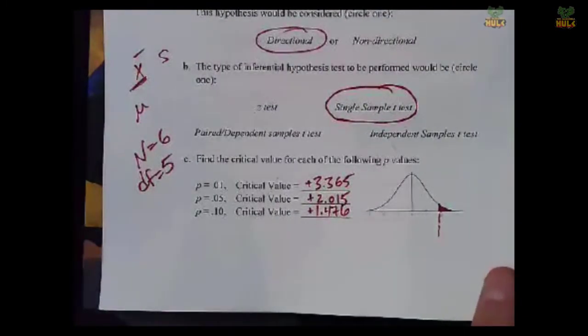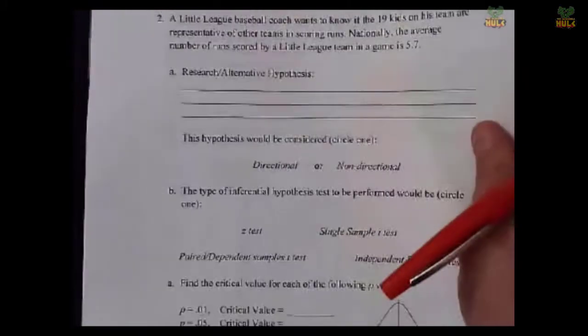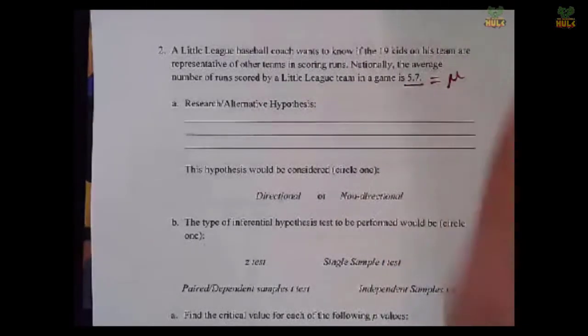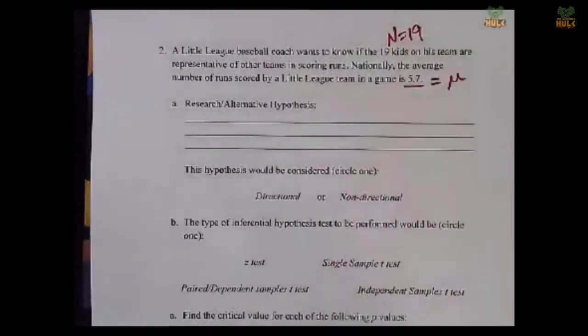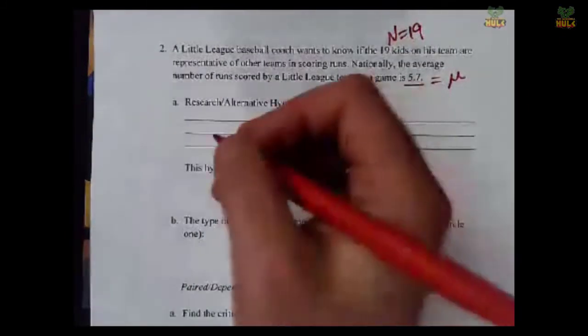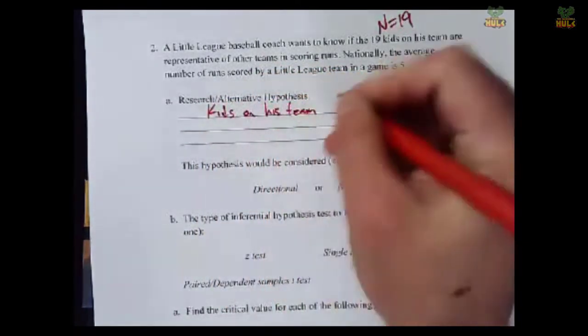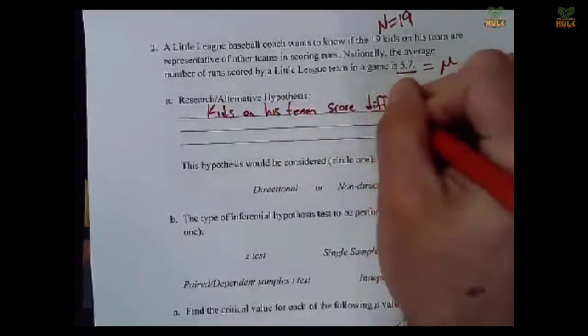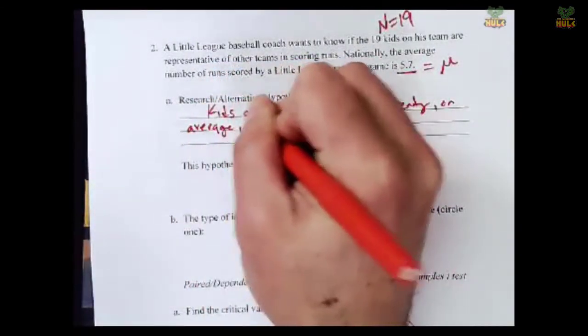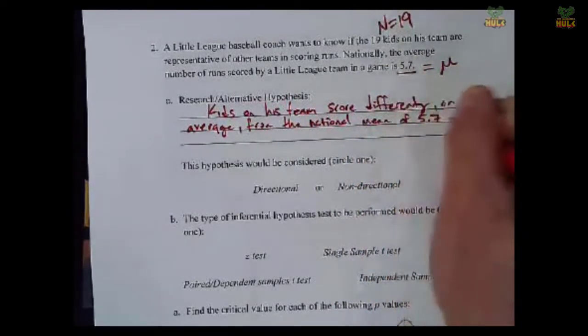The next one would be for 5% in one tail, at degrees of freedom 5, we see it's 2.015. And then finally, when 10% is in one tail, down here in this column here, 10% in one tail, degrees of freedom 5, 1.476. All right, so that's fairly straightforward. Now we need to move on to the next question. The next one says, a little league baseball coach wants to know if the 19 kids on his team are representative of other teams in scoring runs.